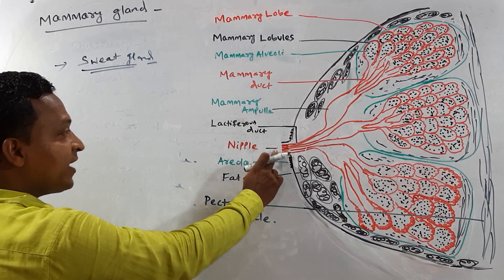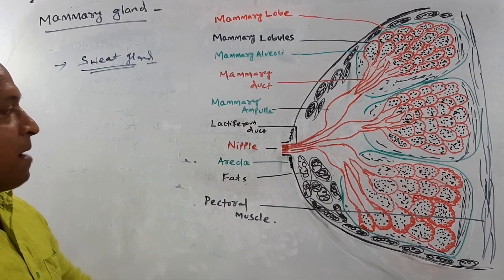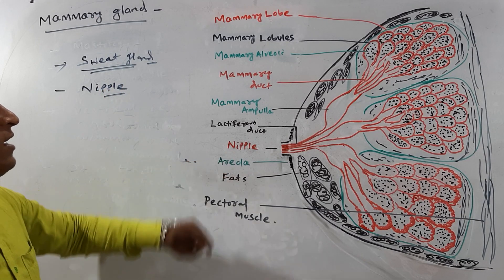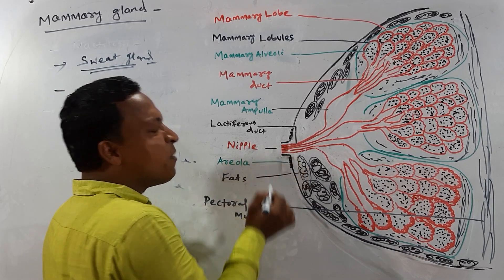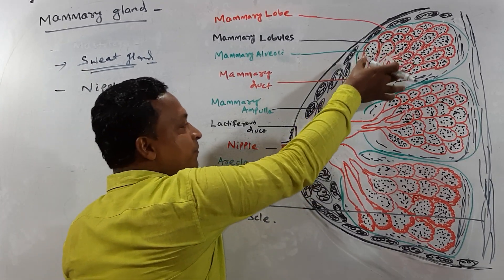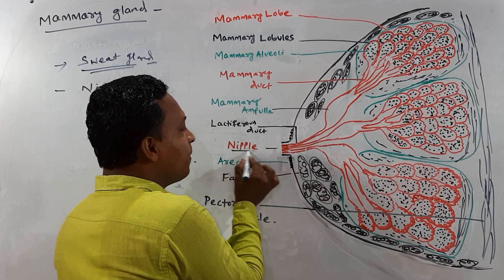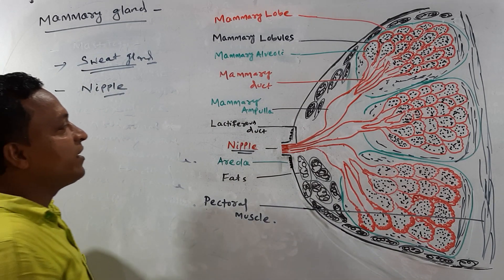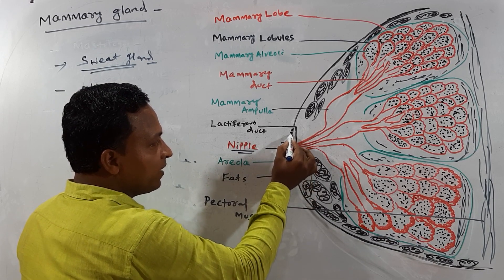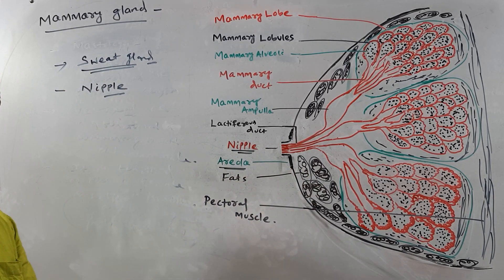Regarding the structure of the mammary gland: the anterior tip of the mammary gland is called the nipple. It is a multi-porous structure containing a number of pores for the release of milk. Around the nipple, there is a pigmented area called the areola.